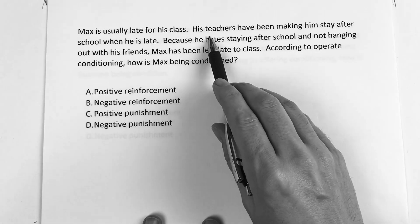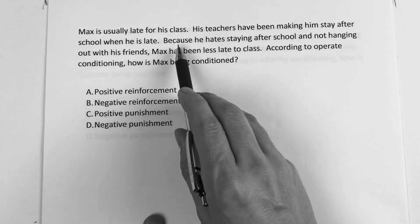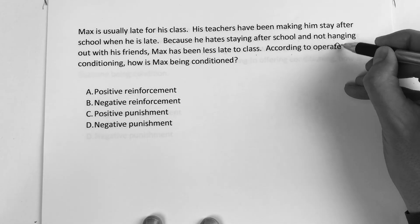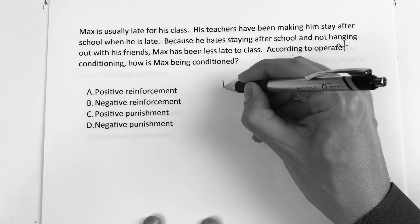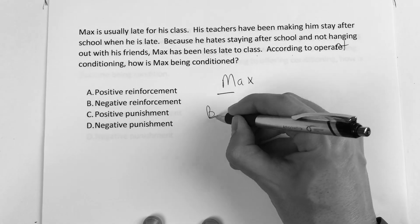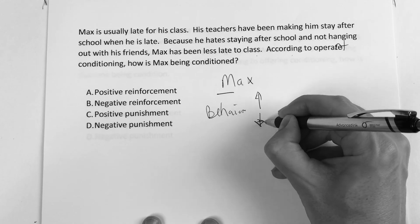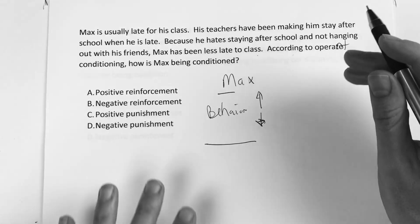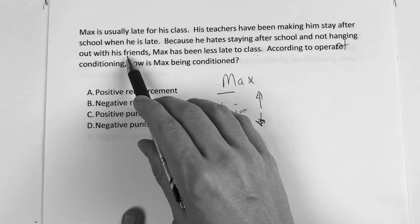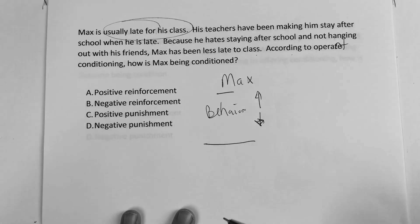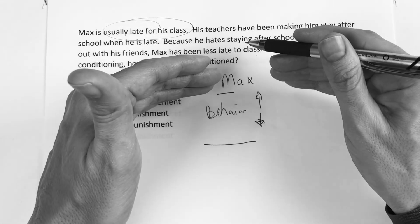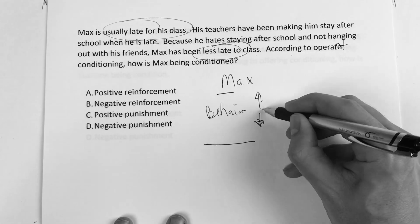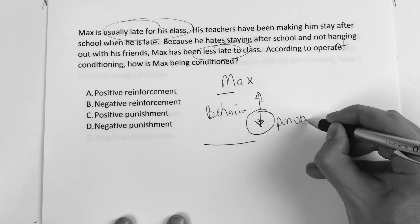This one says: Max is usually late for class. His teachers have been making him stay after school when he is late. Because he hates staying after school and not hanging out with his friends, Max has been less late to class. According to operant conditioning, how is Max being conditioned? We know it's Max. The behavior they're looking at is being late for class. Did that go up or down? He's less late to class, so the concept of being late went down. So we're going to use the word punishment.